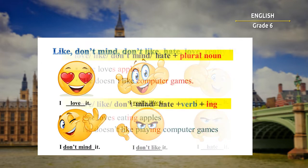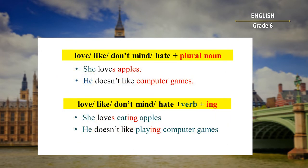Did you know that after the verbs love, like, don't mind, and hate, we can use plural nouns? Let's look at the examples: 'She loves apples' — here we use the plural noun 'apples' after the verb 'love.' Next: 'He doesn't like computer games.' As you can see, even if you make the verb negative, you can still use plural nouns.